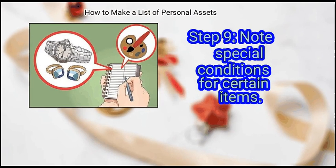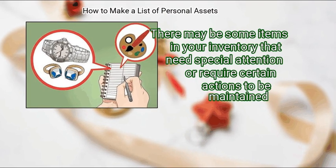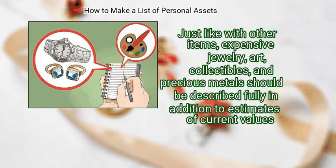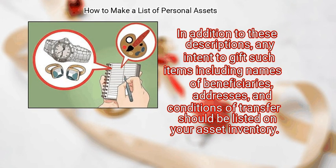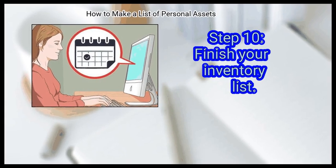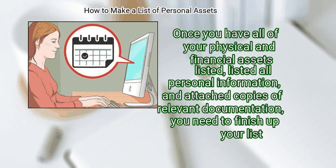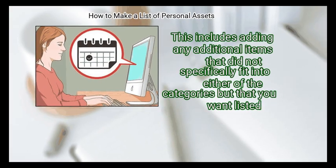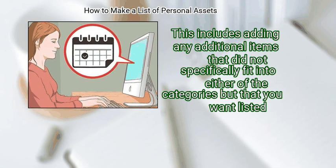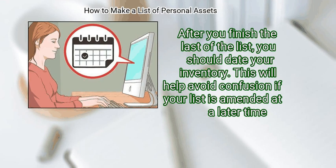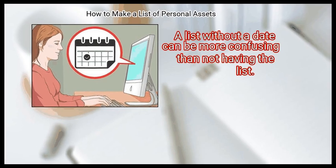Step 9: Note special conditions for certain items. There may be some items in your inventory that need special attention or require certain actions to be maintained. Expensive jewelry, art, collectibles, and precious metals should be described fully in addition to estimates of current values. Any intent to gift such items, including names of beneficiaries, addresses, and conditions of transfer, should be listed on your asset inventory. Finally, once you have all of your physical and financial assets listed, all personal information noted, and copies of relevant documentation attached, add any additional items that did not fit into either category. After finishing the list, you should date your inventory to help avoid confusion if the list is amended later.